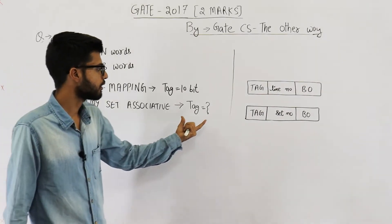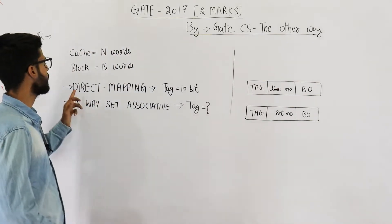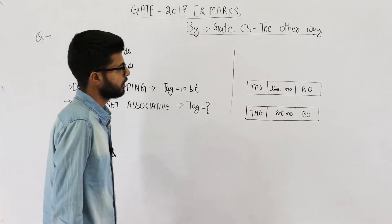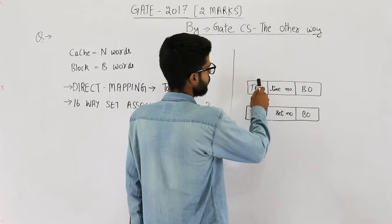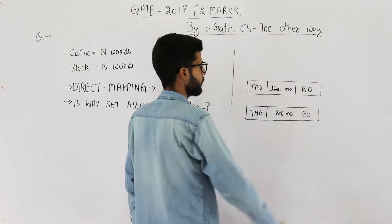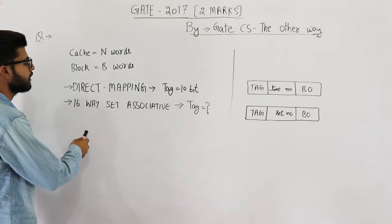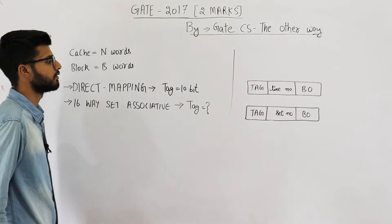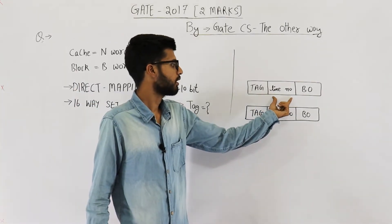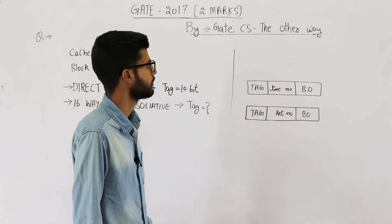In direct mapping, the physical address is divided into tag, line number, and block offset. In set associative mapping, this line number is replaced by a set number — the rest remain the same.